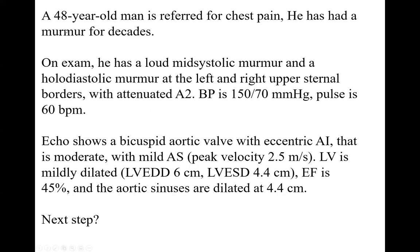Another case: a 48-year-old man referred for chest pain. He has had a murmur for decades. On exam he has a loud midsystolic murmur and a holodiastolic murmur at the left and right upper sternal border with attenuated A2. Blood pressure is 150 over 70, pulse is 60. Echo shows a bicuspid aortic valve with eccentric AI read as moderate, mild AS, mildly dilated LV, EF 45%, and aortic sinuses dilated at 4.4 centimeters.